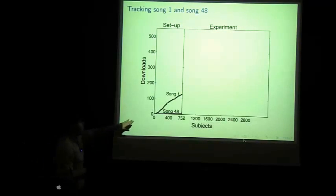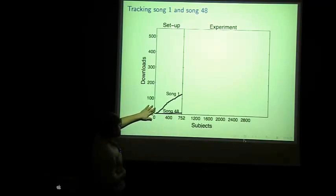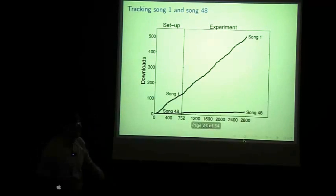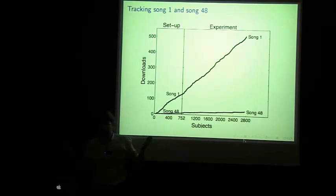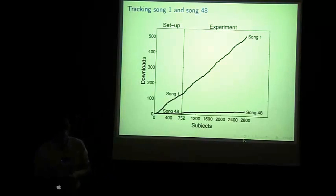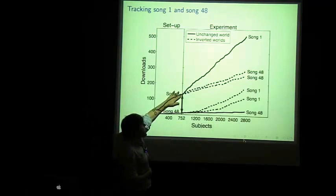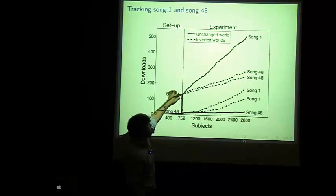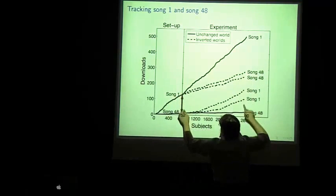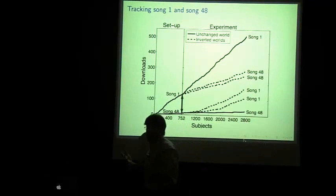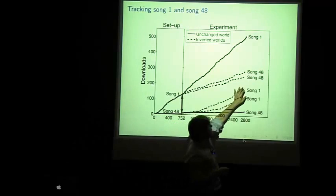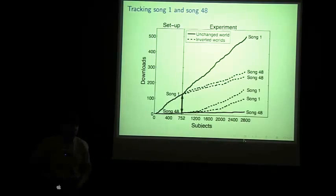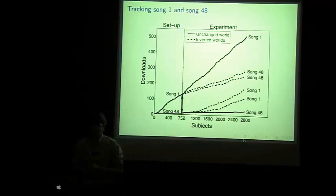Now, let's look at what happened. Here's during the setup period. This is the number of downloads over time for song 1 and song 48. Then, in the unchanged world, we see pretty much no change, so that's good. What do we see in the inverted worlds? We see when song 48 was placed up into song 1 spot, it got many more downloads than it did when it stayed at the bottom. You can see this difference is much bigger. So, it had an effect on the popularity of the song. But, if you project this out, it looks like song 1 will eventually overtake song 48. So, it looks like this had some effect on popularity, but it doesn't look like this will become self-sustaining.